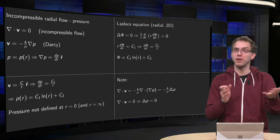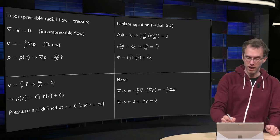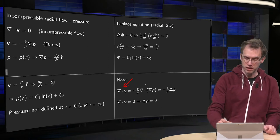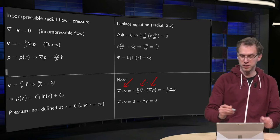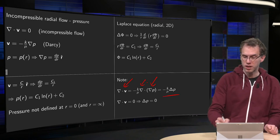I notice our pressure also satisfies this Laplace equation, because what did we have? Divergence of V equals some constant times the divergence of the gradient of the pressure, but the divergence of the gradient is just the Laplacian of V.